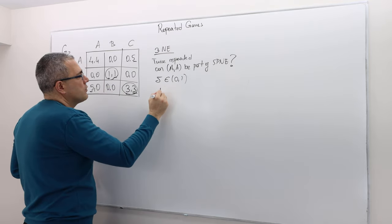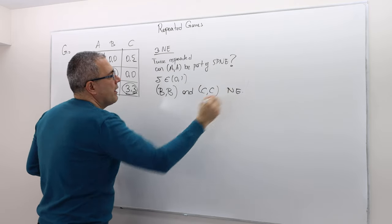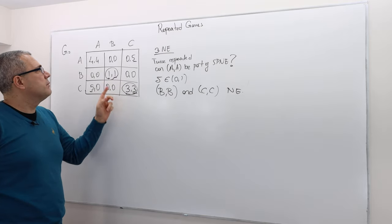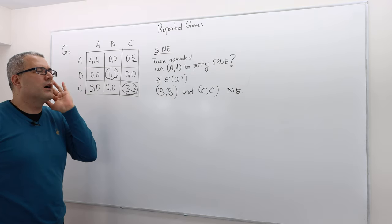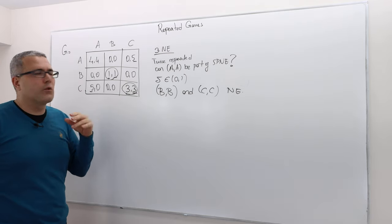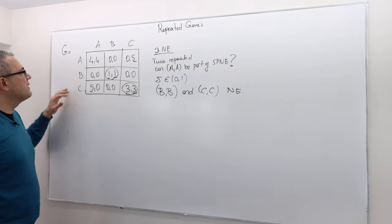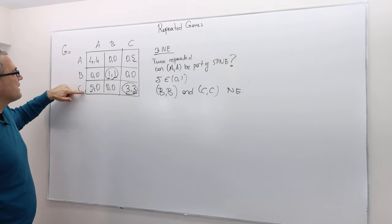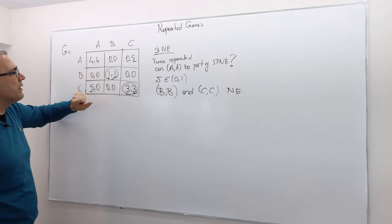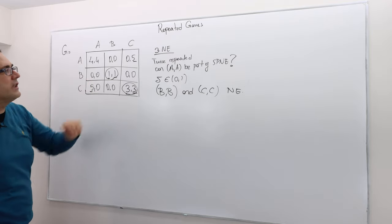The Nash equilibrium outcomes are BB and CC — these are pure Nash equilibria. There's also a mixed strategy Nash equilibrium: a randomization between B and C, roughly one-quarter, three-quarters, for both players. Part of the reason is that A is a weakly dominated strategy. C is weakly dominating — it gives strictly higher payoff than A, except where both give zero. So A is weakly dominated by C for both players.